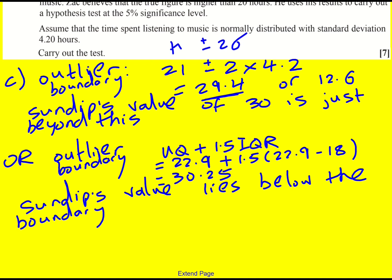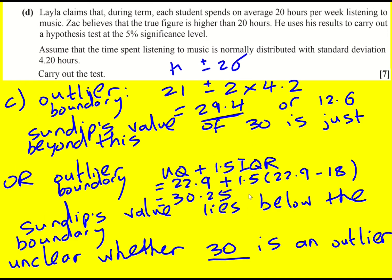So Sandeep's value for this one lies below the boundary. One definition says it's an outlier. One doesn't. The ultimate conclusion is that it's unclear whether 30 is an outlier. If I'd got to say 31, then both would say it was an outlier, would be okay. But this value we're not sure about. And remember these are sort of human definitions for outliers. We have to come up with something to say it's a bit too far. But when you get around this boundary point, you're a little bit less sure. And when the two of them disagree, which is what's happening here, you can be really unsure.